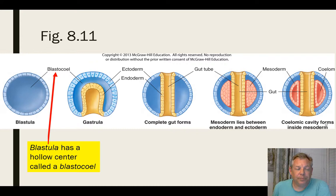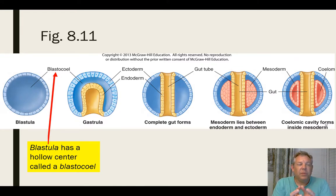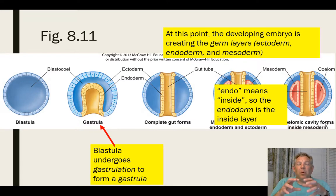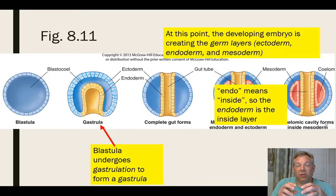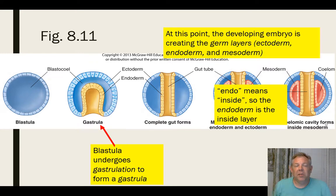Here's another figure from your book showing this development. The blastula is a hollow ball stage — you've got many cells forming a hollow sphere, and that hollow center is called the blastocoel. At some point, as the organism develops and produces more cells, the blastula undergoes gastrulation. This is when part of that hollow ball starts to fold in and form a cavity inside the developing organism. At this point we call it a gastrula — you undergo gastrulation to form a gastrula.